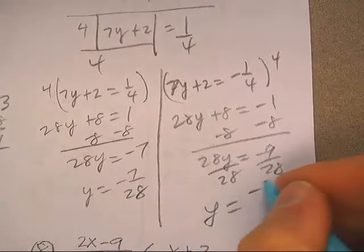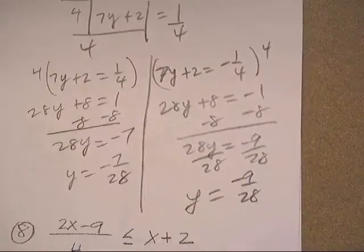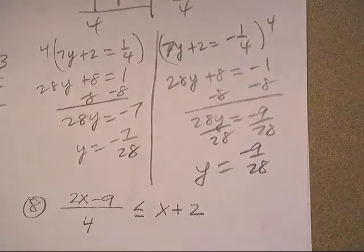y is negative nine twenty-eighths. Do not change those to some decimal that you round because you'll count them wrong.